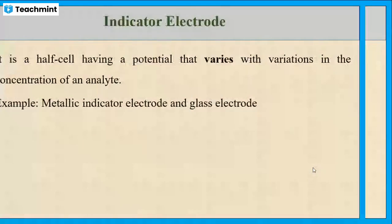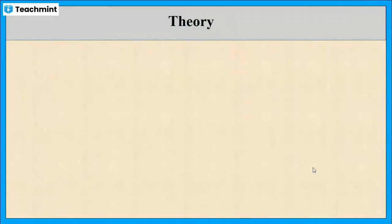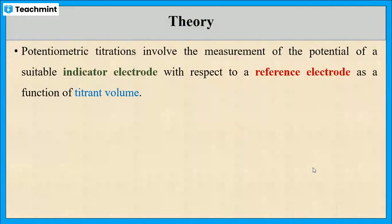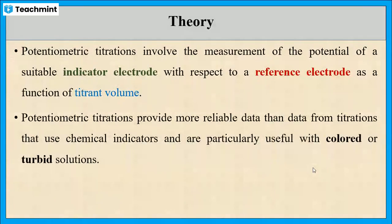Now let us see the theory of potentiometric titration. This type of titration involves the measurement of the potential of the indicator electrode with respect to the reference electrode as a function of titrant volume — that is, the volume of solution consumed from the burette. Compared to conventional titrations, instrumental analysis like potentiometry gives more accurate data. These are useful even for colored and turbid solutions.